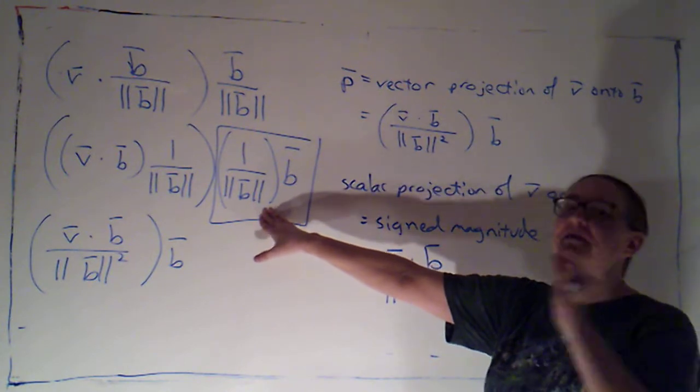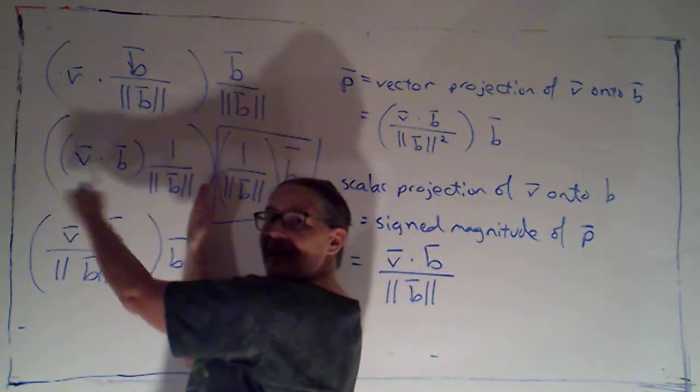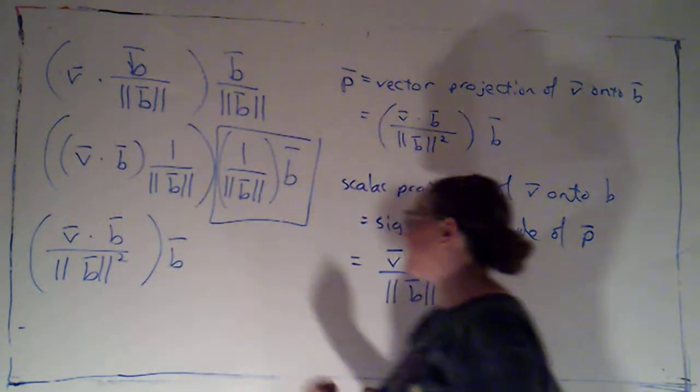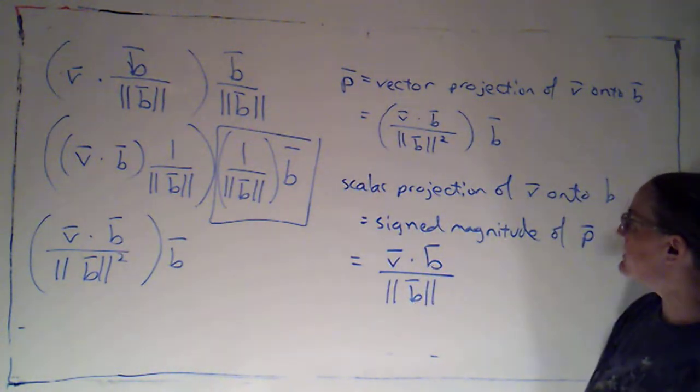And I can see from this formula that that scalar projection is just going to be V dotted with B over the magnitude of B. I want to be careful. It's not over the magnitude of B squared, because I want to get the signed magnitude. So, I'm going to say this, that's my B hat. That's the unit vector that points in the direction of B. This is what I'm scaling that unit vector by. Okay. So, this is going to be the signed magnitude.